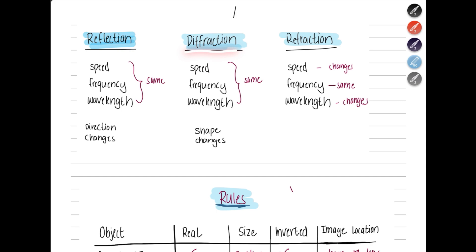Then you have diffraction when it's moving through a gap. The shape changes. The speed, frequency and wavelength is again same. Because there is no change in the medium of the wave. In refraction, the speed changes. Frequency remains same. But the wavelength is changing as well. If frequency remains same, increase in velocity will increase wavelength. And reduction in wavelength is going to reduce velocity.